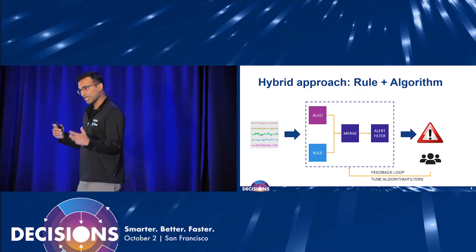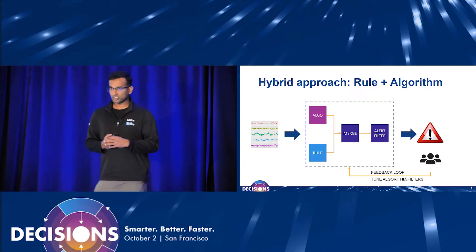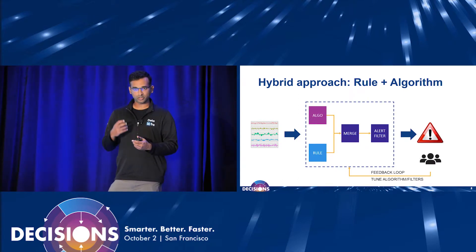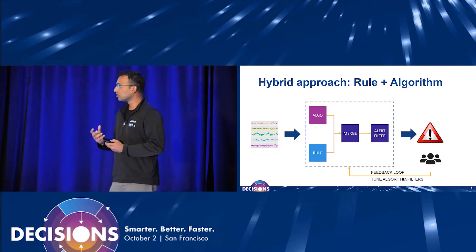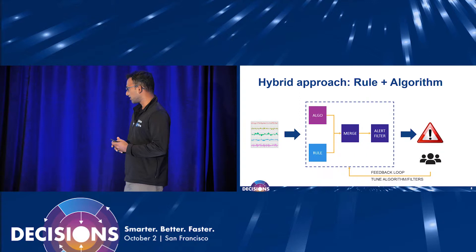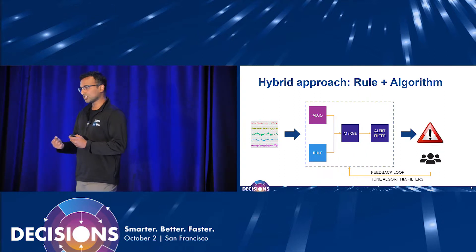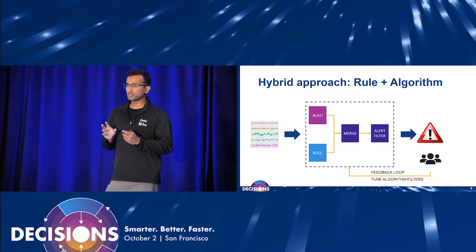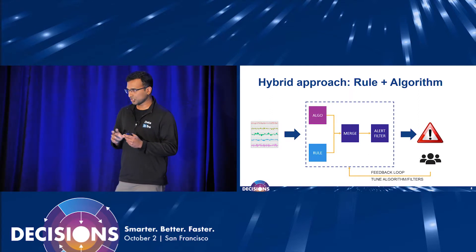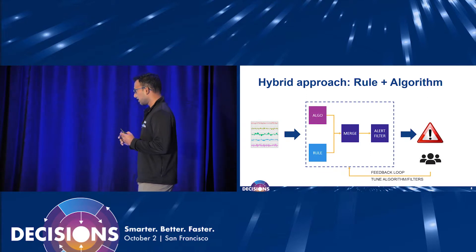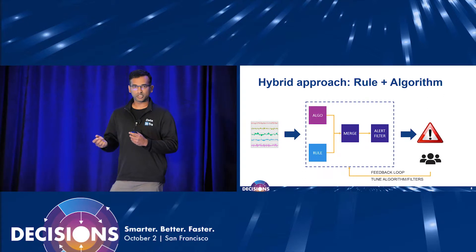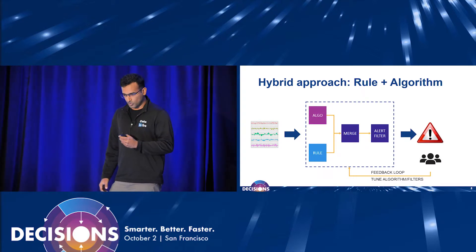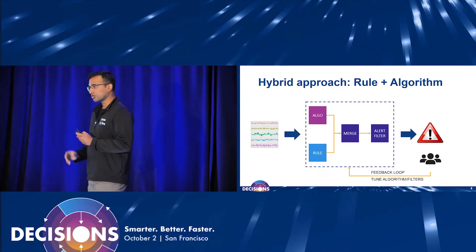What we did is take a hybrid approach. We wanted to give a very good starting point, so we take input from the user — the domain knowledge — so people can actually feed in what they already know about a metric. We also have the algorithmic component, which starts off relatively aggressive or sometimes conservative depending on the settings, but then it learns from feedback. As and when we send alerts and users give feedback, it learns from them.